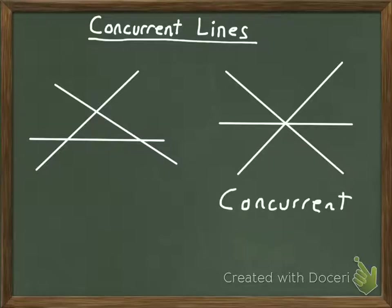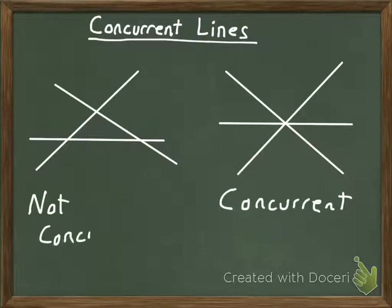If you have three or more lines that do not intersect at a single point, you would say that those lines are not concurrent to one another.